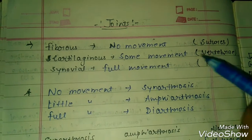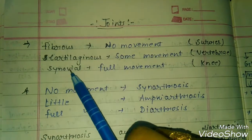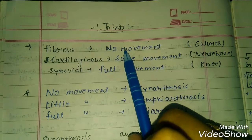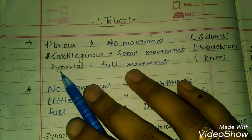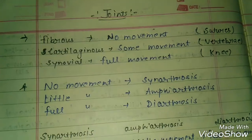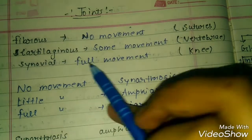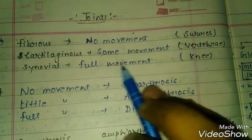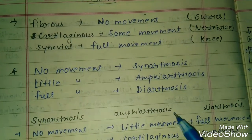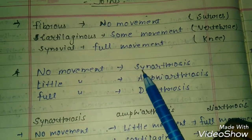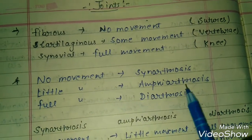In this video I'm talking about joints. Joints are three parts: fibrous, cartilaginous, and synovial. Fibrous has no movement. Cartilaginous has some movement. Synovial has full movement. These are classified as synarthrosis, amphiarthrosis, and diarthrosis.